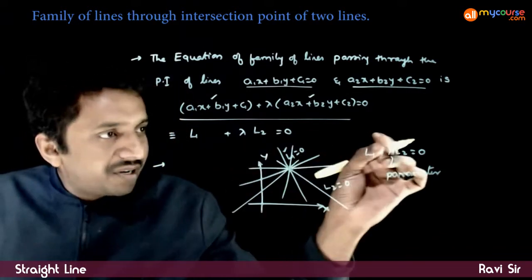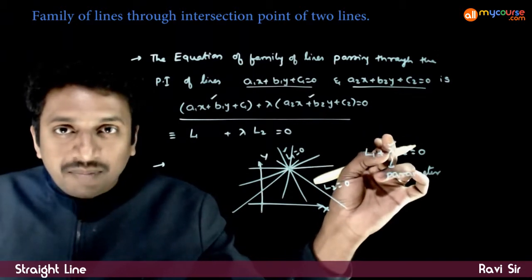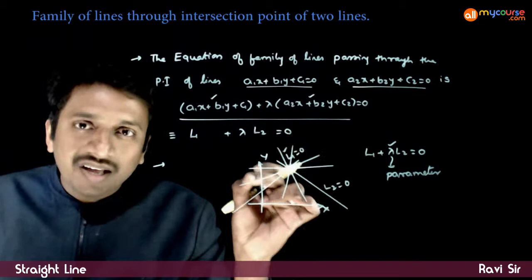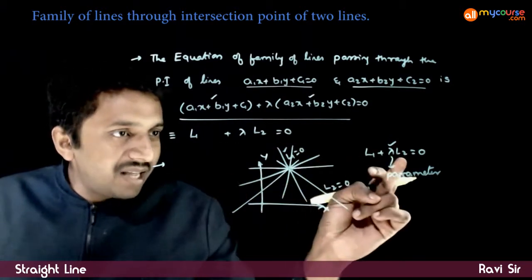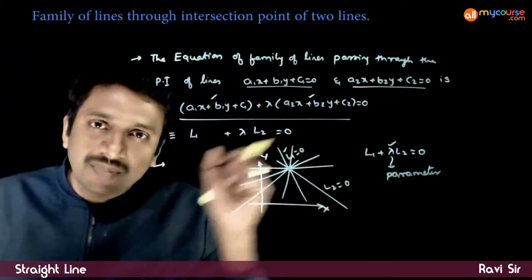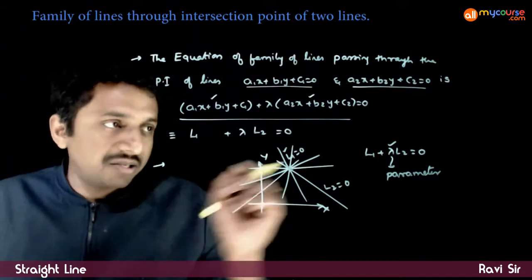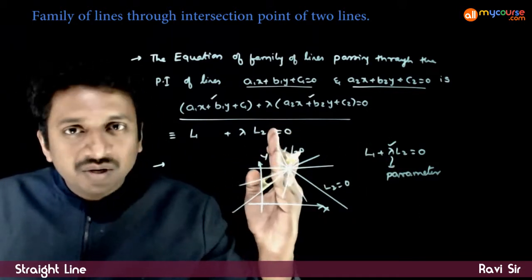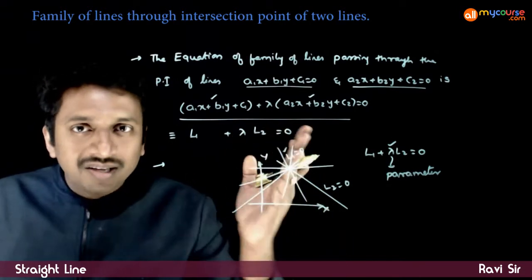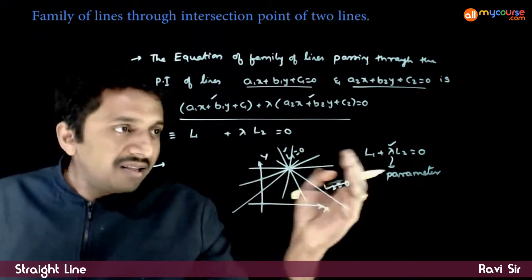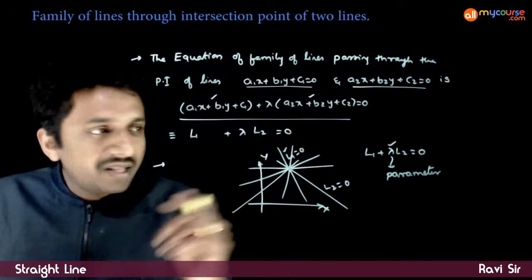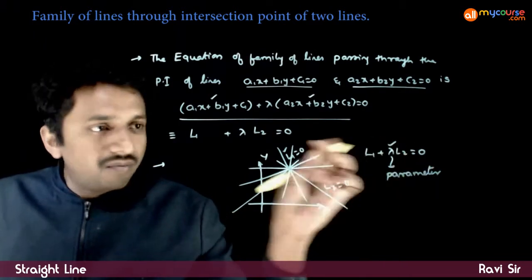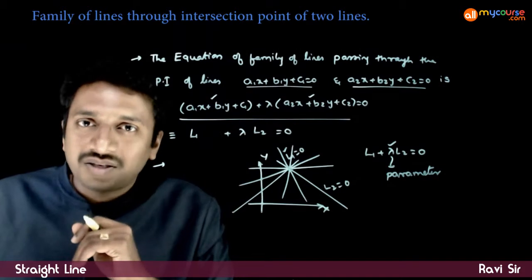For different values of λ, you get different lines. For λ = 1, you get some line passing through the intersection point; for λ = 2, another line; λ = 3, λ = 4, and so on. The line keeps rotating for different values of λ, and this equation will always pass through the point of intersection.